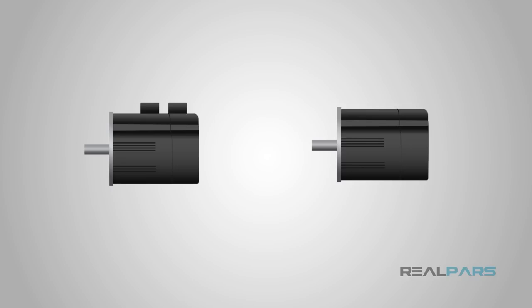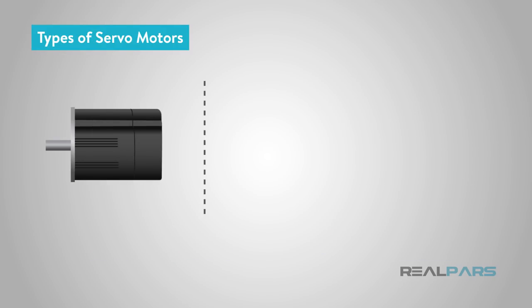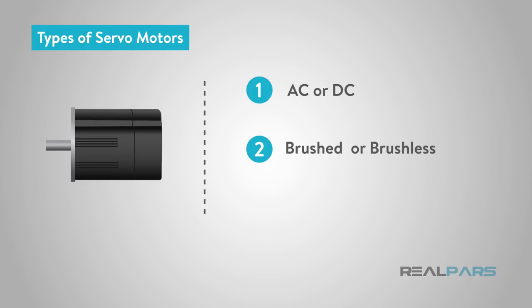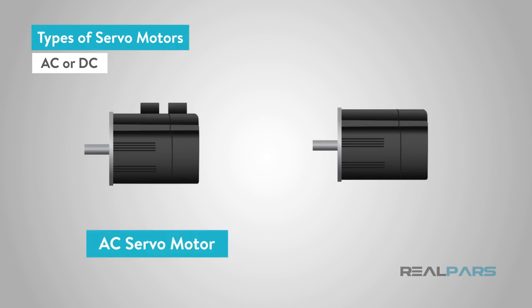Types of servo motors are classified into different types based on their application, such as the AC servo motor and DC servo motor. There are three main considerations to evaluate servo motors: first, based on their current type — AC or DC; secondly, on the type of commutation used, whether the motor uses brushes; and the third is the motor's rotating field, the rotor, whether the rotation is synchronous or asynchronous. AC or DC consideration is the most basic classification of a motor based on the type of current it will use.